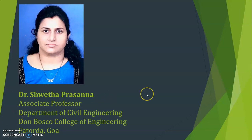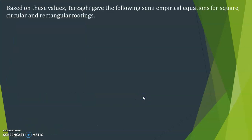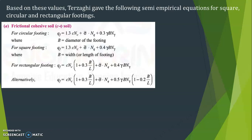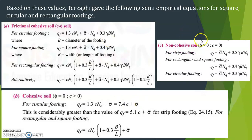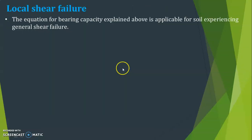Let us discuss bearing capacity of soil. Yesterday I covered Terzaghi's bearing capacity equations for cohesive soil and non-cohesive soil. For non-cohesive soil, C equals zero, so the formula for strip footing is Q_f = σ' N_q + 0.5 γ B N_γ. For rectangular and square footing there is a corresponding equation, and for circular footing there is another equation.